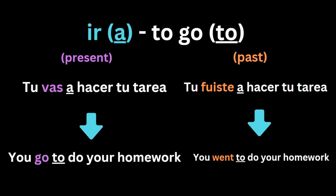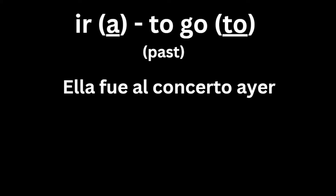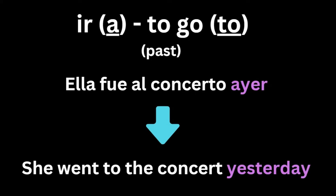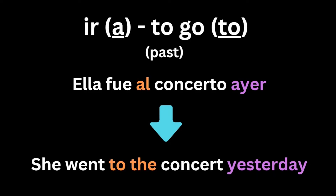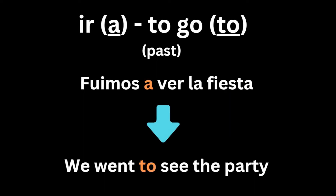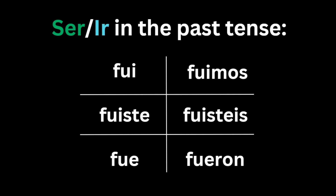You can make more examples, like ella fue al concierto ayer, she went to the concert yesterday, with ayer indicating that the action happened in the past. And also having al, which means to the, again showing it's the verb ir. You can also say fuimos a ver la fiesta, we went to see the party. This sentence also has the preposition a inside, which refers to an action done in the past, once again showing that the sentence contains the verb ir.